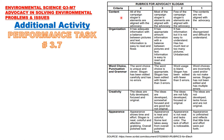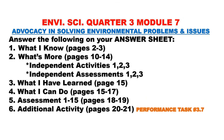For Performance Task 3.7, the rubric criteria are: content, organization, word choice, punctuation and grammar, creativity, and appearance. The perfect score for this activity is 20 points. For Quarter 3, Module 7, you need to have the following on your answer sheet: What I Know, What's More — answer independent activities 1 to 3 and independent assessments 1 to 3 — What I Have Learned, What I Can Do, Assessment, and Additional Activity. The additional activity will also be your Performance Task 3.7.